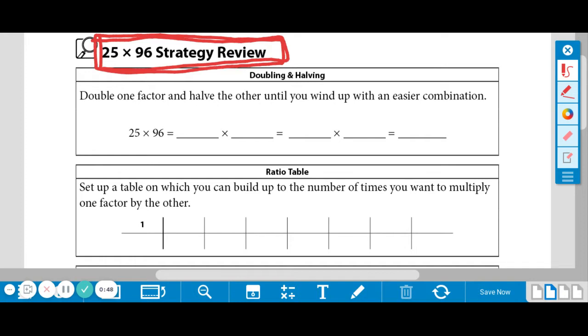So we are going to start with the doubling and halving strategy. So under your title, go ahead and write doubling and halving. This has actually been something that's happened in ratio tables for problem strings, but we're just going to keep it as equations this time. To double and half, to find your multiplication answer, you're going to double one factor and half the other until you wind up with an easier combination.